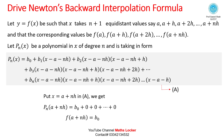We now derive Newton's Backward Interpolation Formula. Let y = f(x) be such that x takes n+1 equidistant values: a, a+h, a+2h, up to a+nh, with corresponding values f(a), f(a+h), f(a+2h), up to f(a+nh).